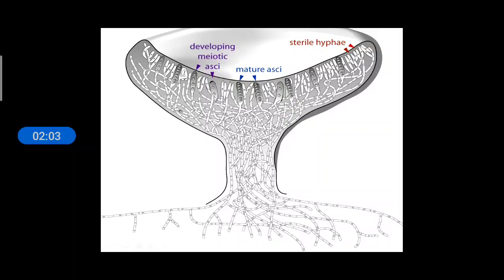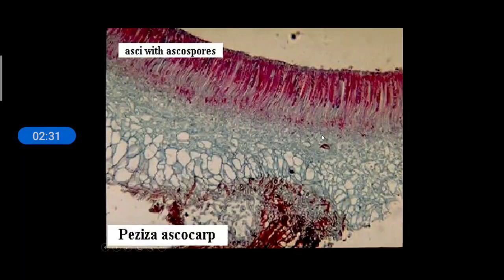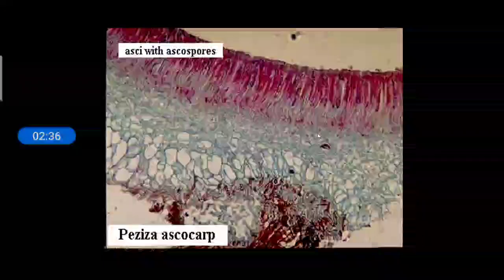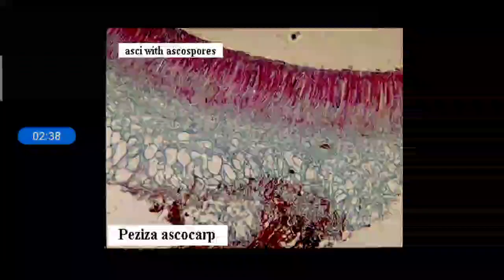But at the tip of each hyphae, karyogamy occurs, which results in diploid cells. They undergo meiosis and form four cells, which further undergo mitosis and form eight cells. And these cells are called Ascospores because they are present in the sac called Ascus. And this whole cup-like structure is called Ascocarp. So now we can see the Peziza is an Ascocarp in which Asci is present and Ascospores are present inside it.